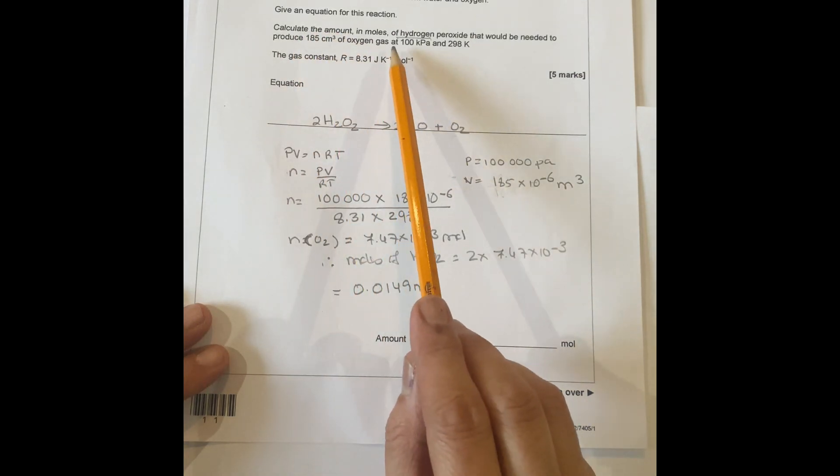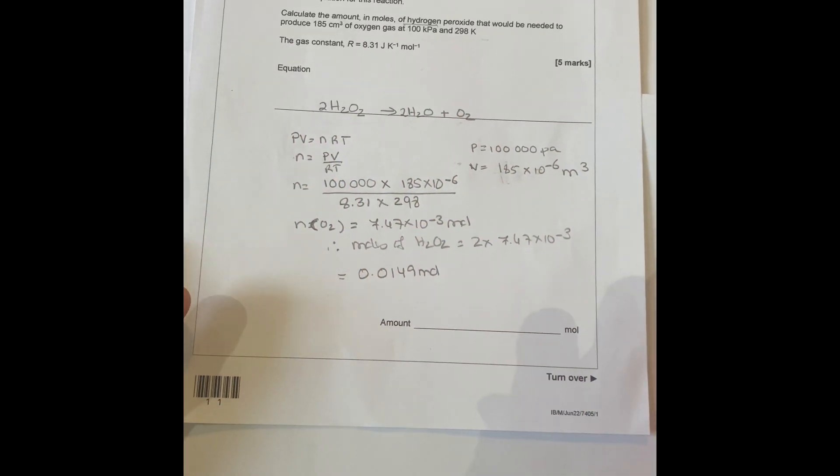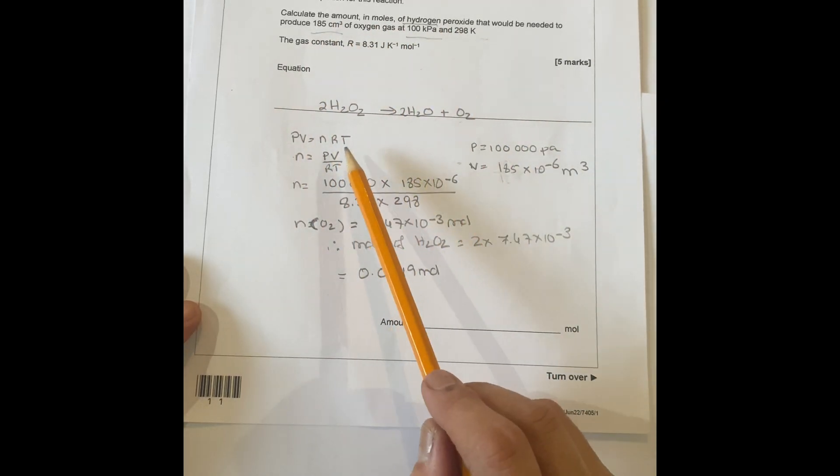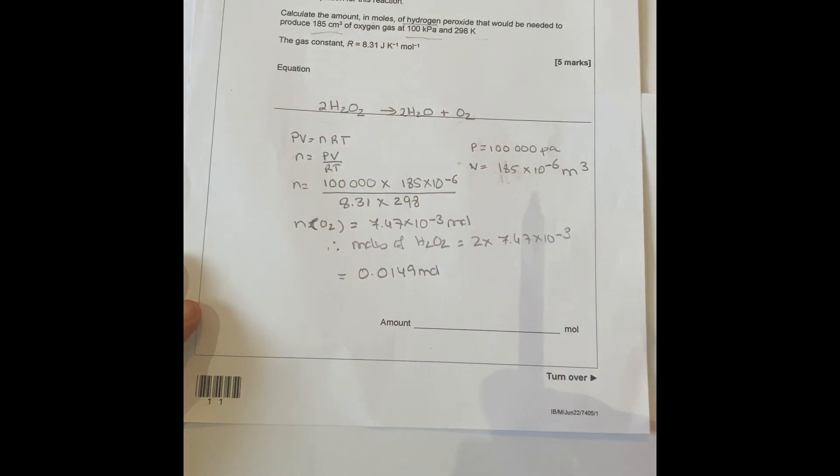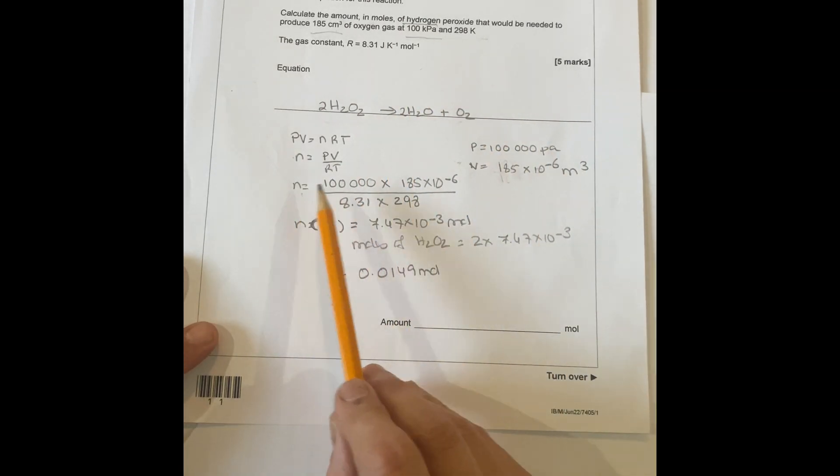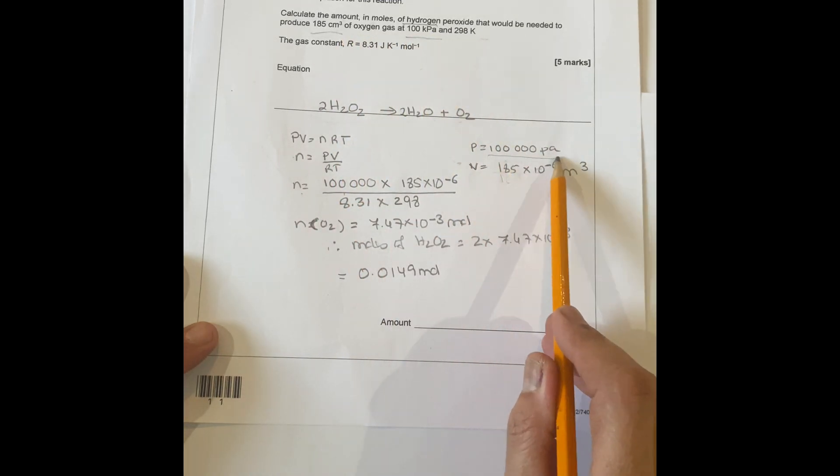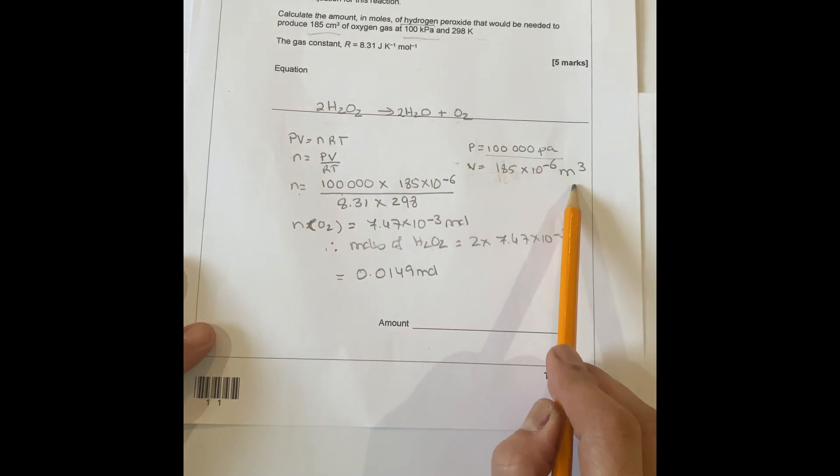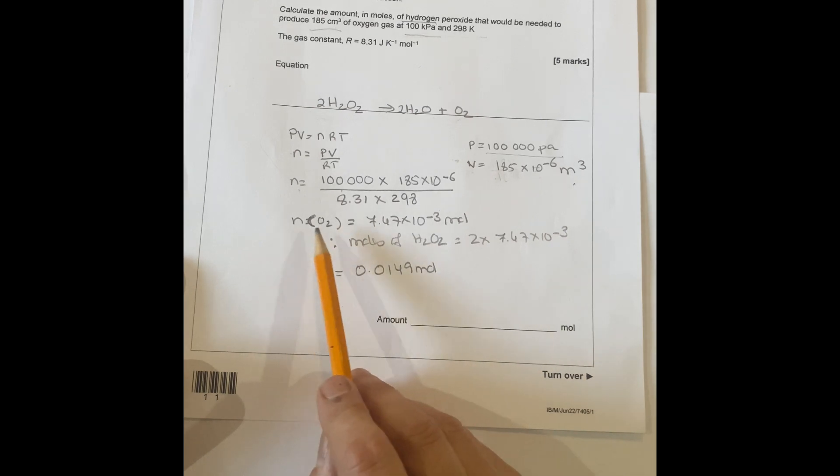You start with PV equals nRT because that's what it needs. You've got the pressure, you've got the volume, so you have to find out the amount of moles of hydrogen peroxide. You've got 100 because they give you 100 there, you've got to change to 100 Pa, divide by a thousand. Your volume you have to change from centimeters to meter cubed, so you multiply by 10^-6 or divide by a million.